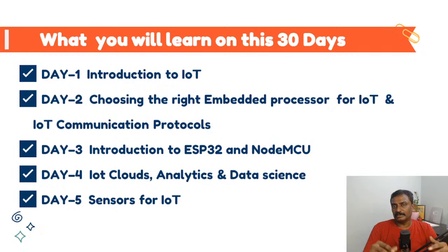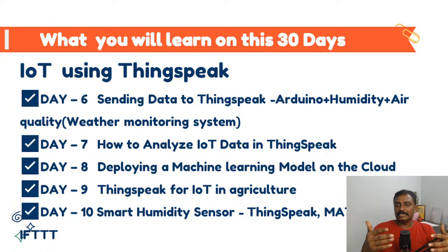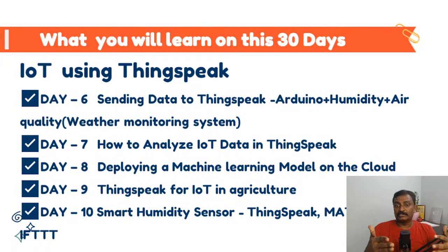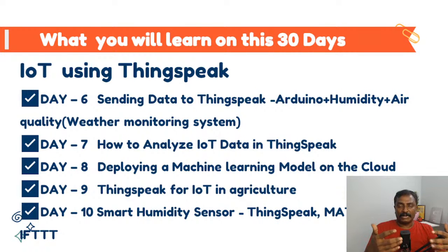Days Six to Ten cover the ThingSpeak platform — from MathWorks, where you can write MATLAB code on the cloud. Day Six: sending data to ThingSpeak using ESP32, implementing a simple weather monitoring system. Day Seven: analyzing IoT data in ThingSpeak. Day Eight: deploying a machine learning model on the cloud and writing a simple neural network. Day Nine: using IoT in agriculture with a soil moisture sensor. Day Ten: implementing a smart humidity sensor using ThingSpeak, MATLAB, IFTTT, and OpenWeatherMap.